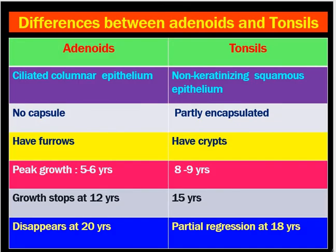Now let's discuss the differences between tonsils and adenoids. Adenoids are collections of lymphoid follicles in the nasopharynx, whereas tonsils (also called palatine tonsils) are present on the lateral wall of the oropharynx. Adenoids are lined by ciliated columnar epithelium (as the nasopharynx is a respiratory organ), whereas tonsils are lined by non-keratinizing squamous epithelium. Adenoids have no capsule; tonsils are partly encapsulated. Adenoids have vertical furrows; tonsils have oblique crypts. Peak growth of adenoids is at 5–6 years; tonsils at 8–9 years. Adenoid growth stops at 12 years; tonsil growth stops at 15 years. Adenoids disappear at 20 years, whereas tonsils begin partial involution at 18 years.